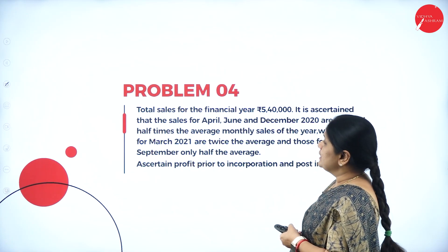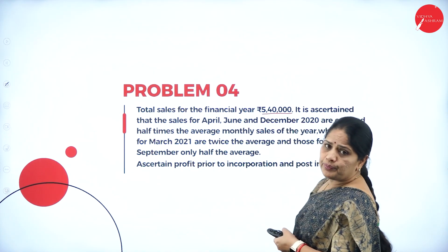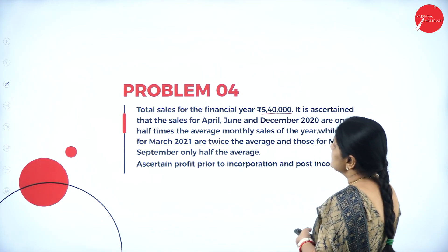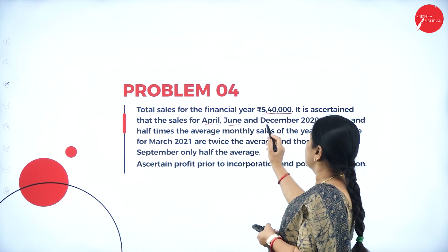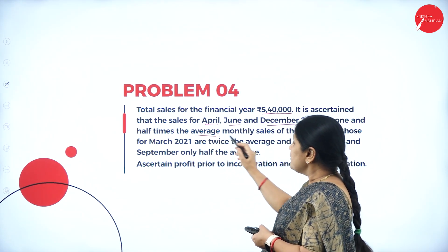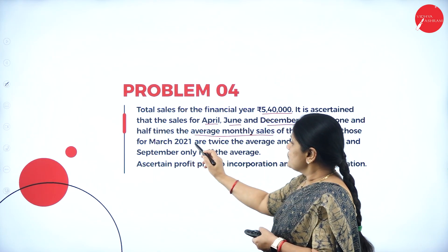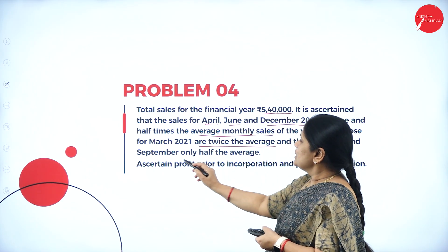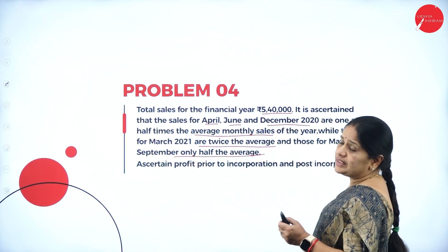In continuation of the problem, the total sales for the financial year is Rs. 5,40,000. It is ascertained that the sales for April, June and December are one and a half times the average monthly sales of the year, while those for March are twice the average, and those for May and September are only half the average.